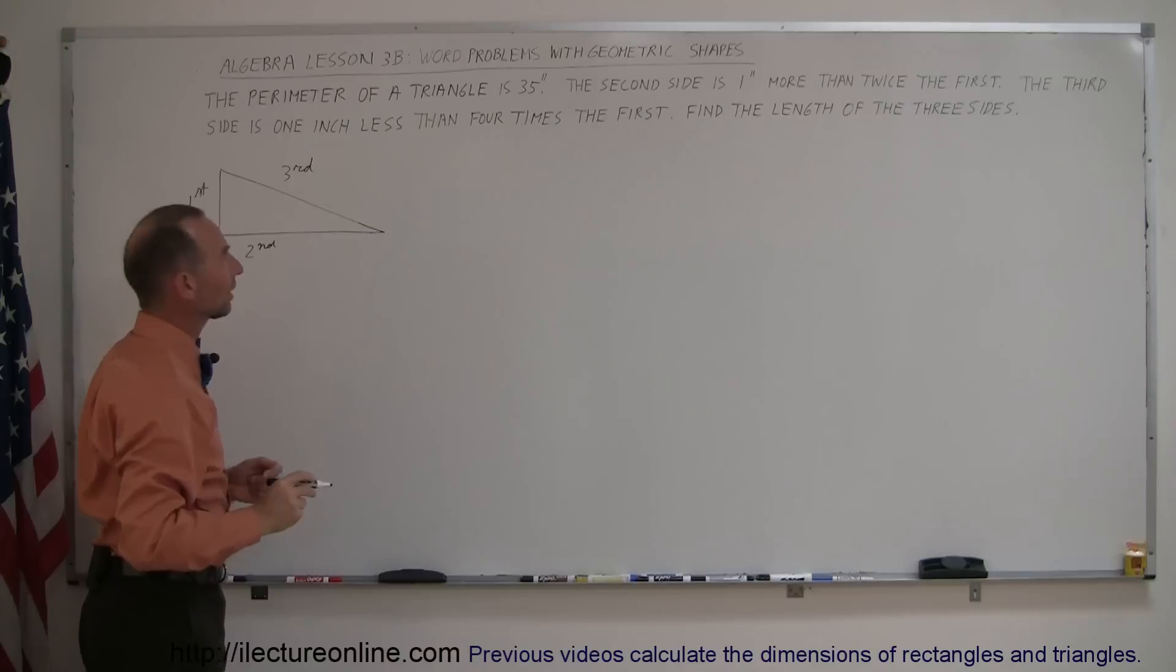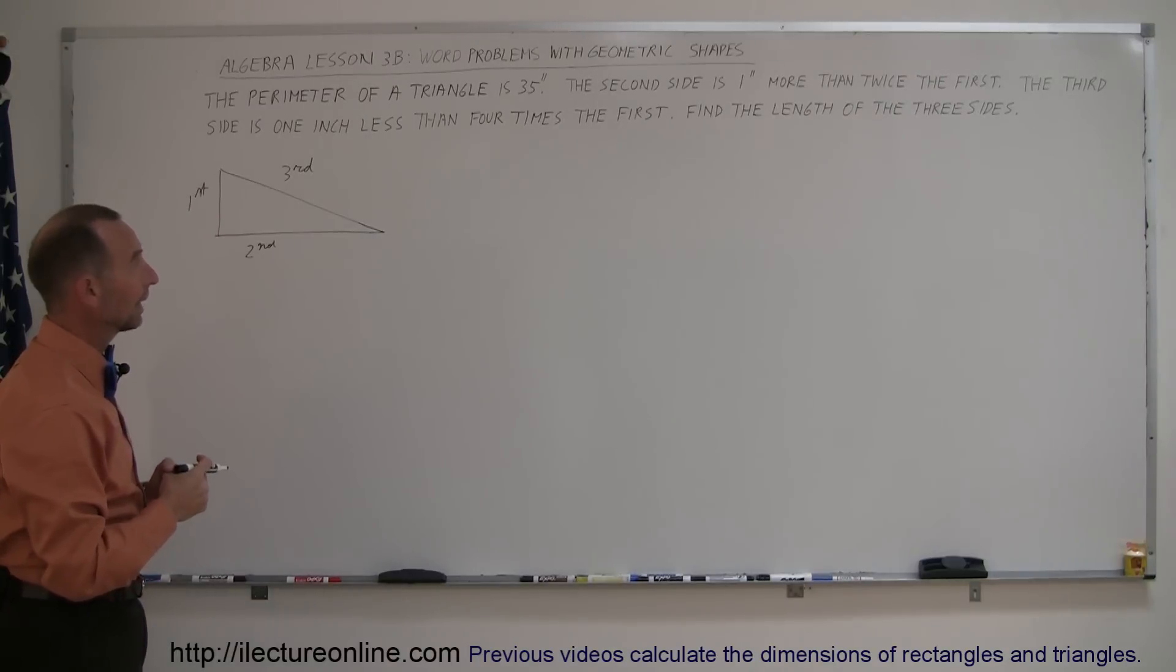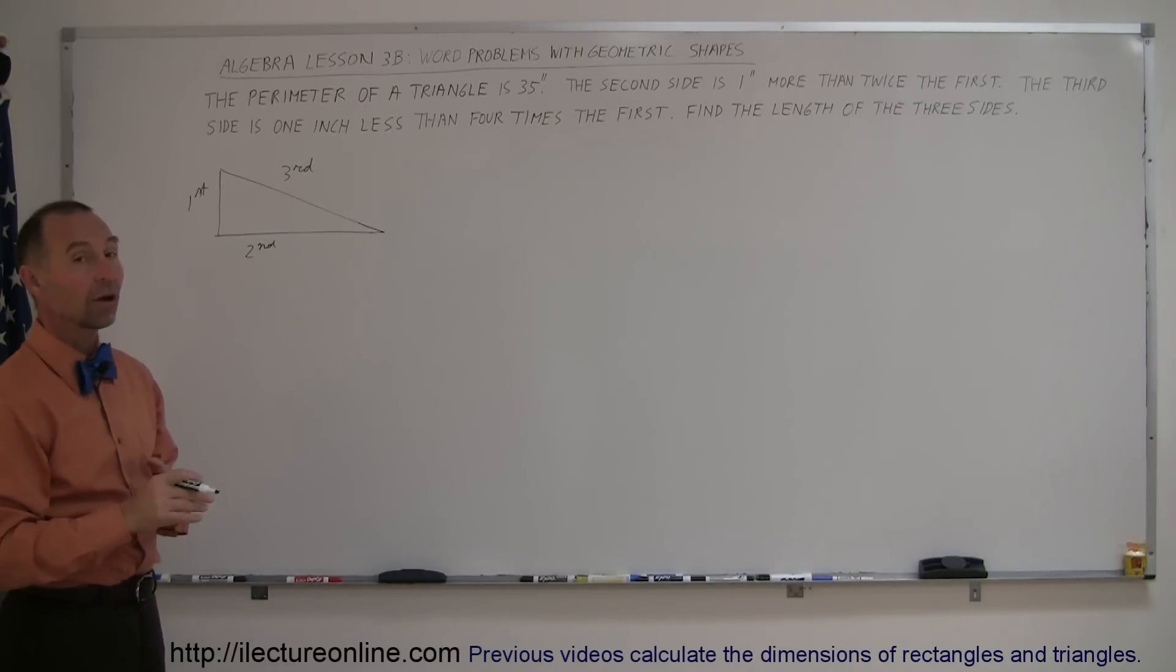Now they tell us that the perimeter of this triangle is 35 inches, and then they tell us that the second side is one inch more than twice the first, the third side is one inch less than four times the first. Find the length of the three sides.